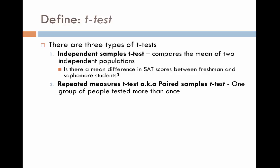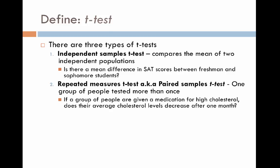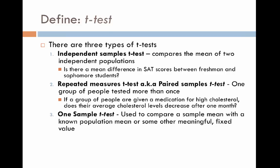The second type of t-test is called the repeated measures t-test or the paired samples t-test. This is when you've got one group of people — one population — and you're testing them more than once, testing them over time. An example is if a group of people are given a medication for high cholesterol, does their average cholesterol level decrease after one month? We take their cholesterol level before the medicine, give them the medicine, then test them again a month later. That's an example of the paired samples t-test.